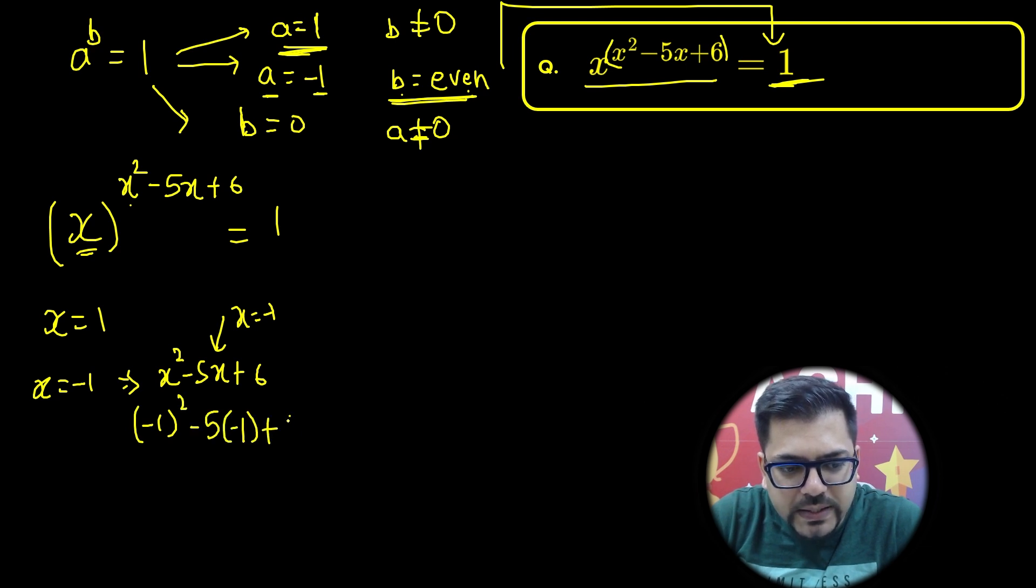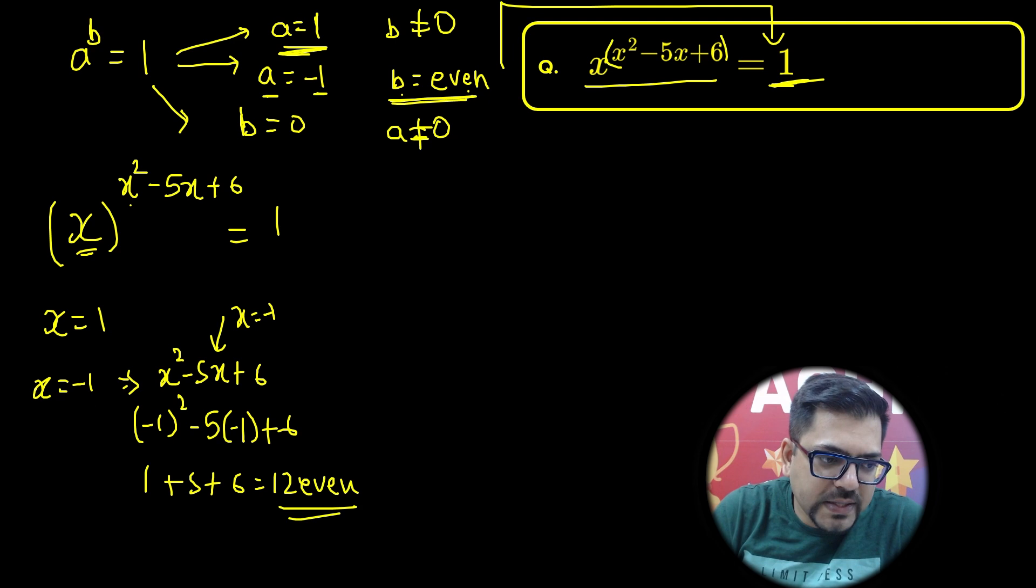So here if I put x equals minus 1, I'll get minus 1 squared and minus 5 into minus 1 and plus 6. So we have got 1 plus 5 plus 6, and that equals 12. So it's surely an even number, meaning x equals minus 1 is also one of the solutions.